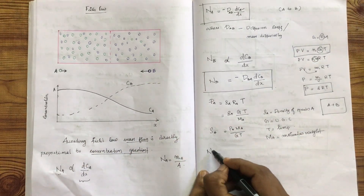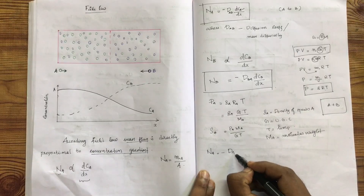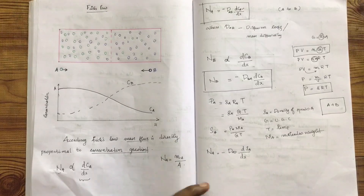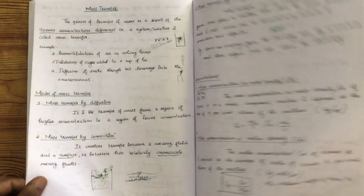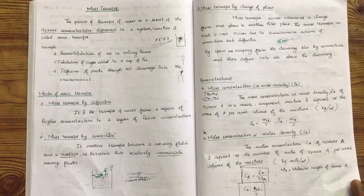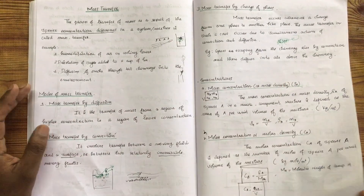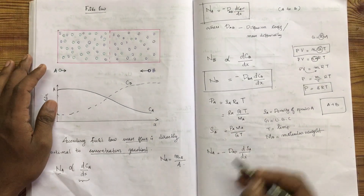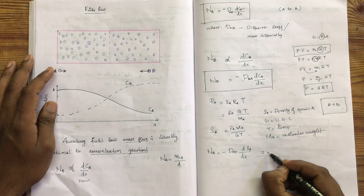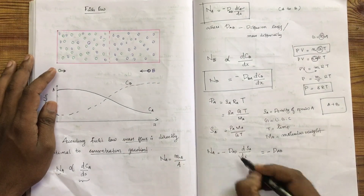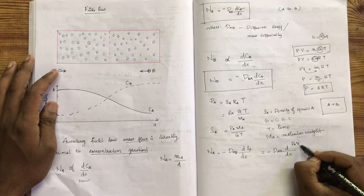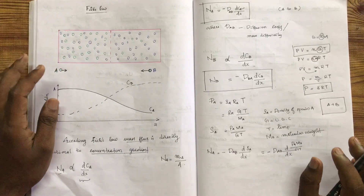Na is equal to minus DAB, d by dx. This is the mass concentration in mass transfer diffusion. The flux Na is equal to minus DAB, d by dx.